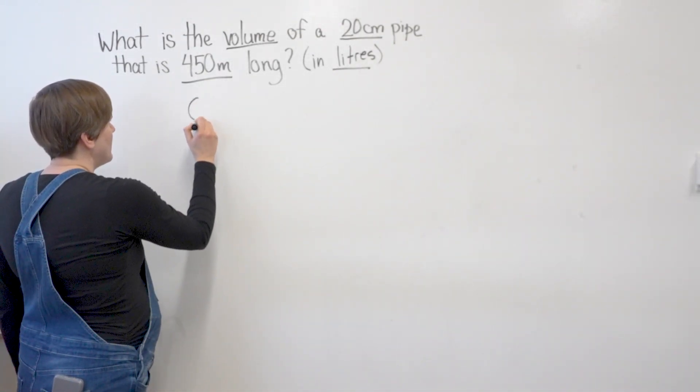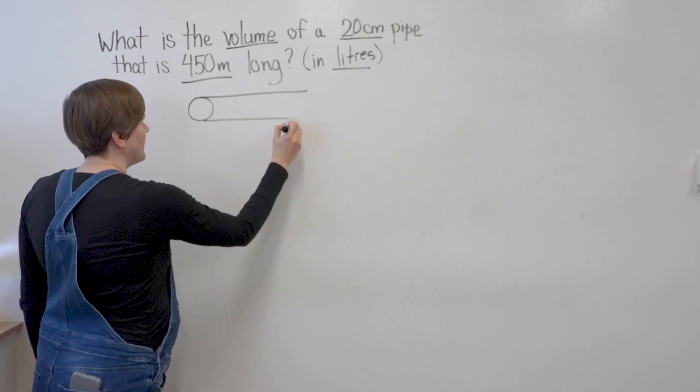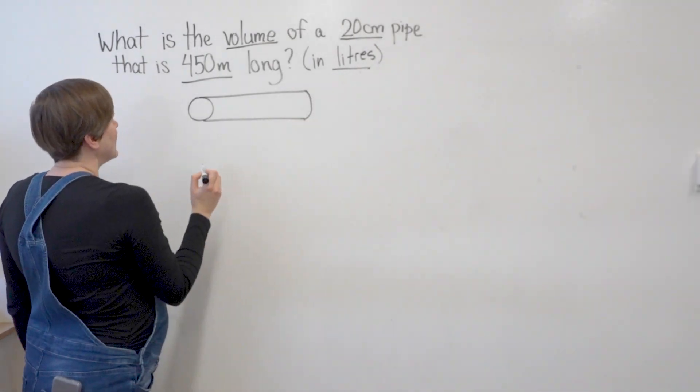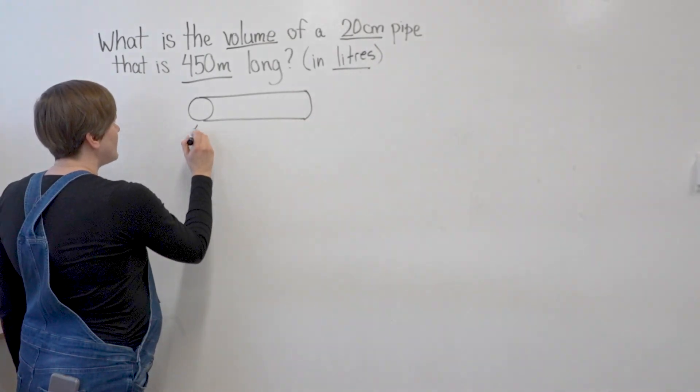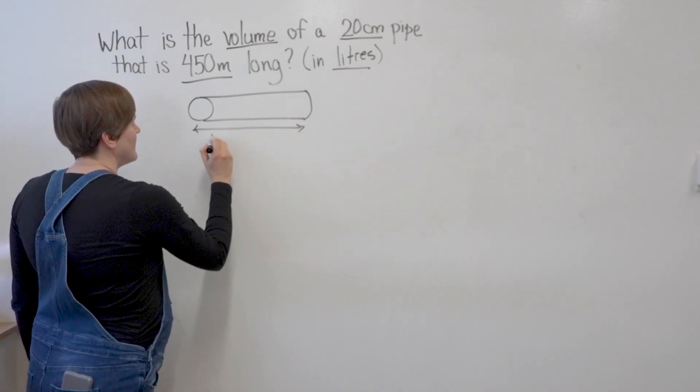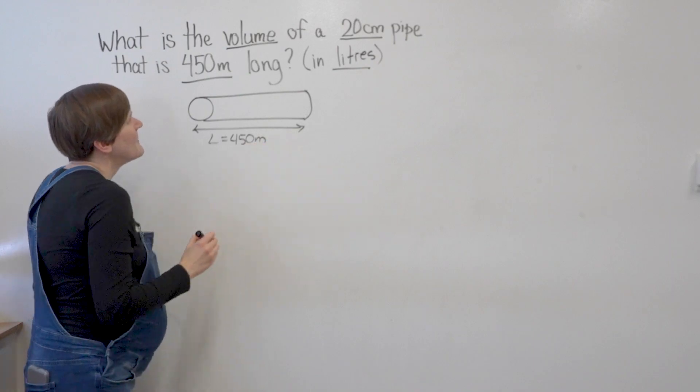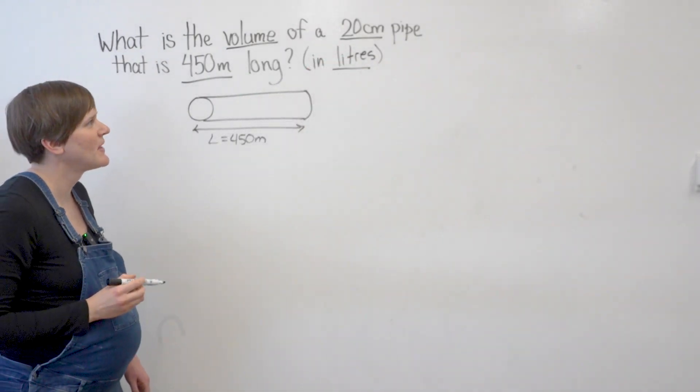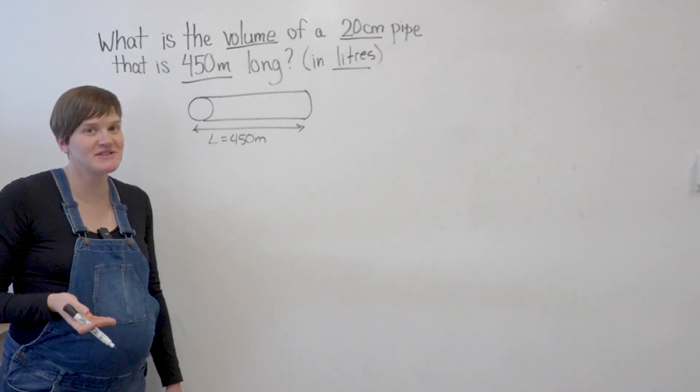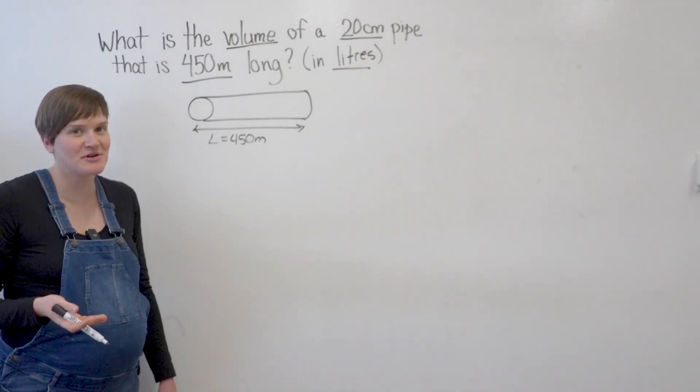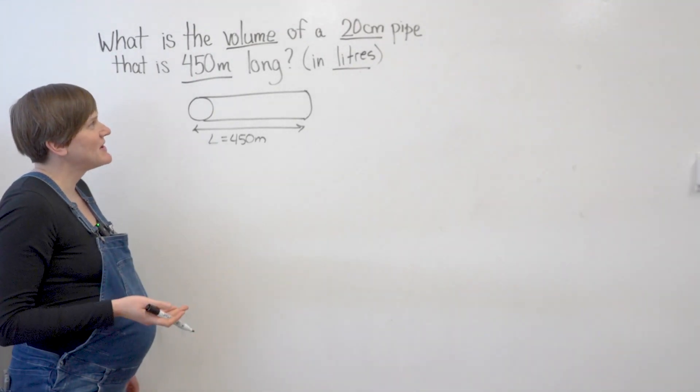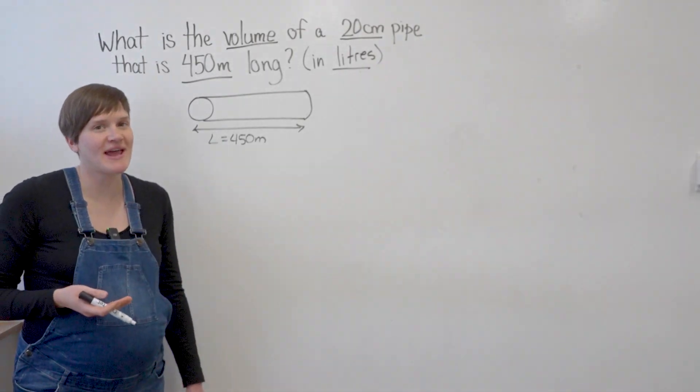So I've got a pipe and it says it's 450 meters long and it says it's a 20 centimeter pipe. So in the water industry when a pipe is described that way 20 centimeters that means that it's a 20 centimeter diameter pipe.